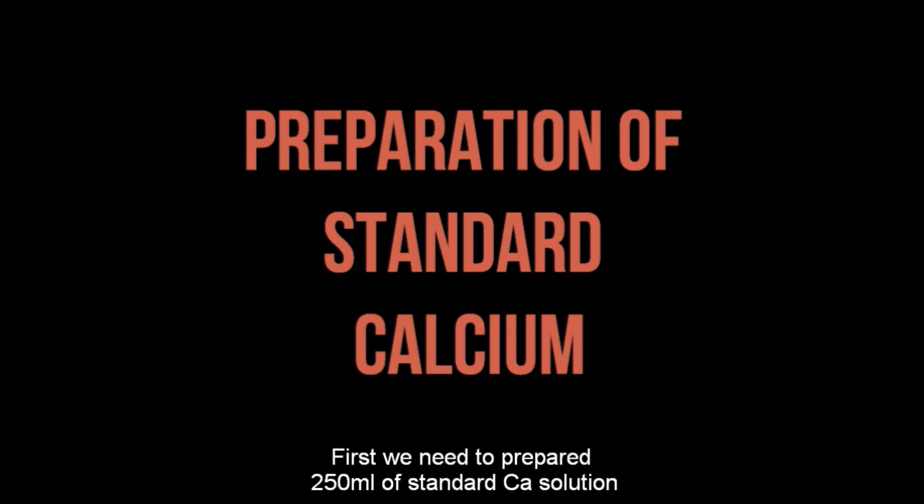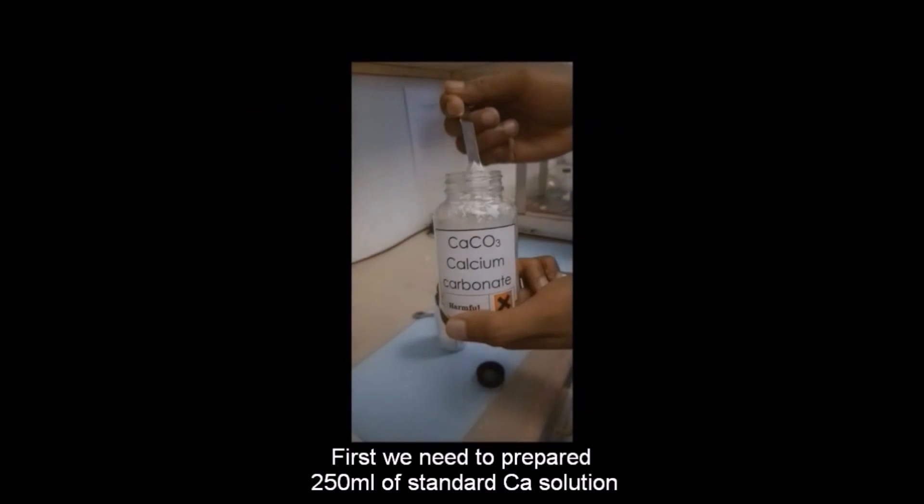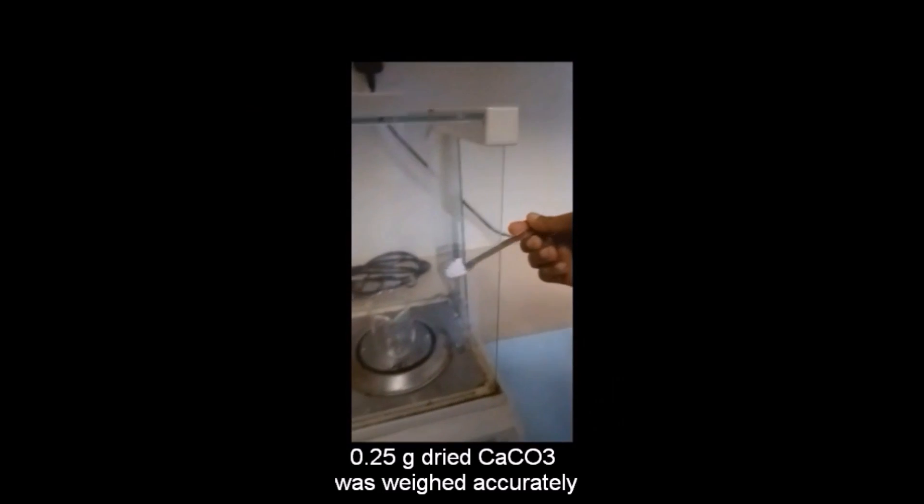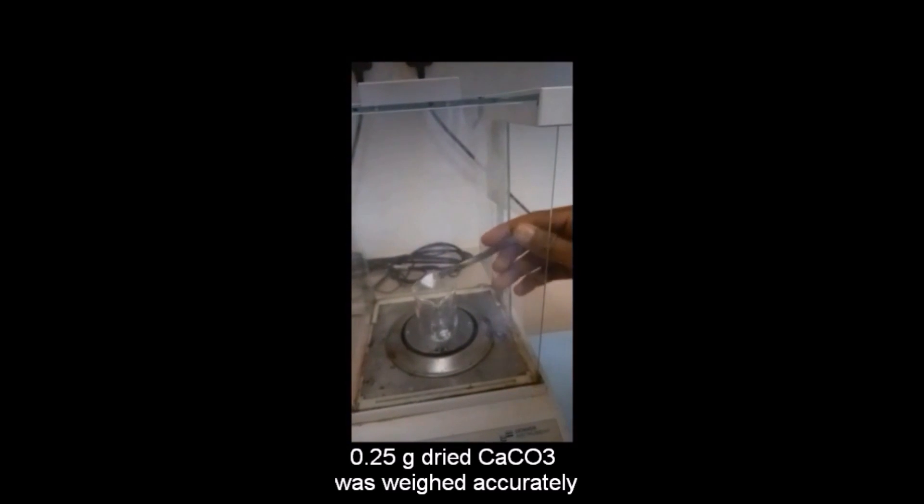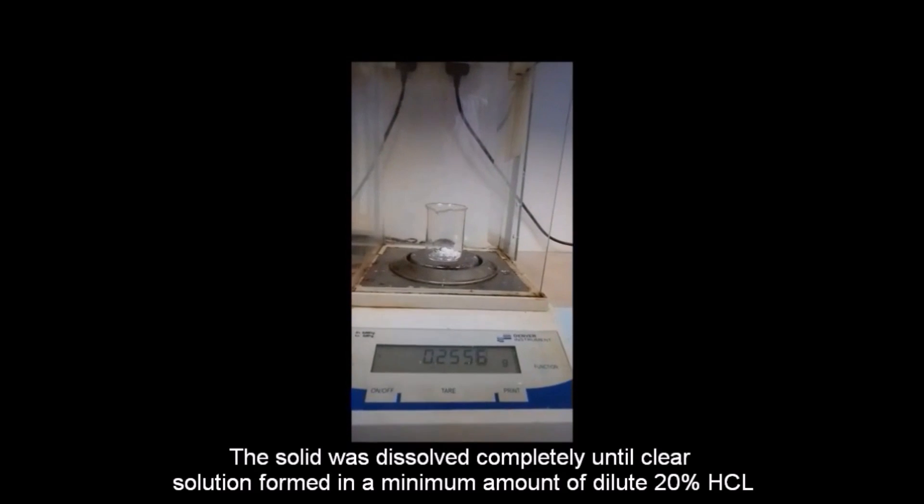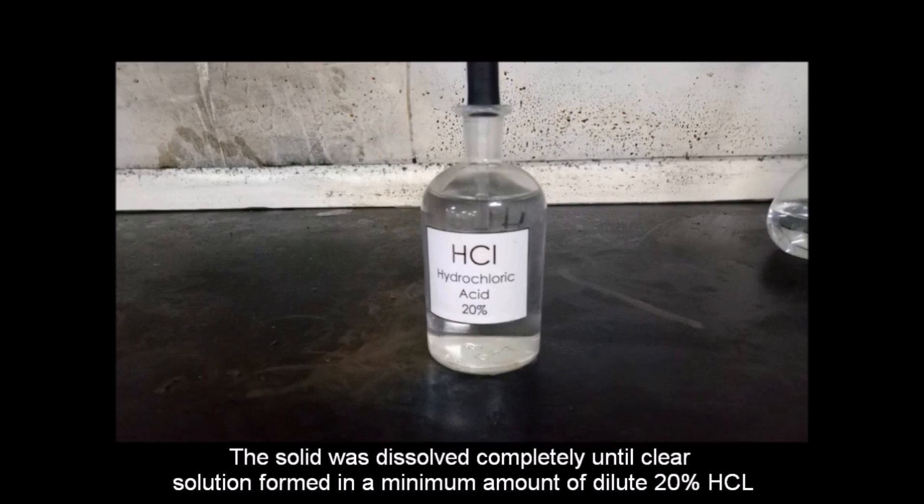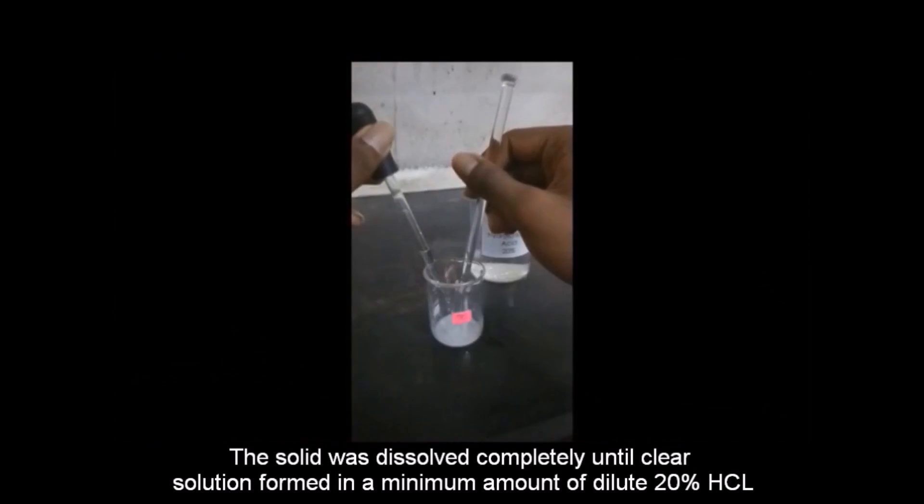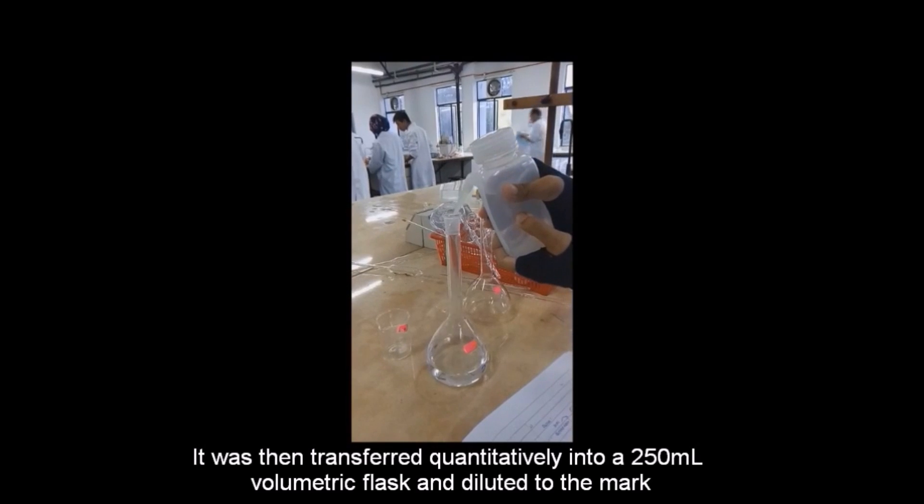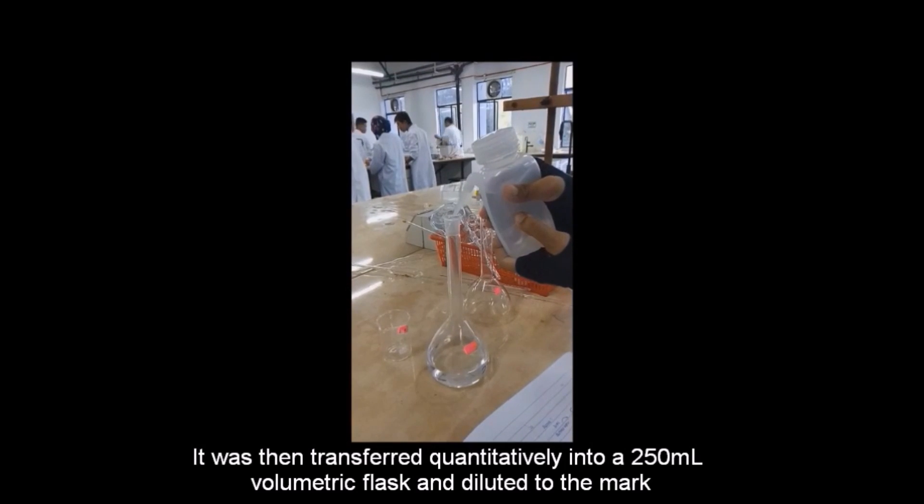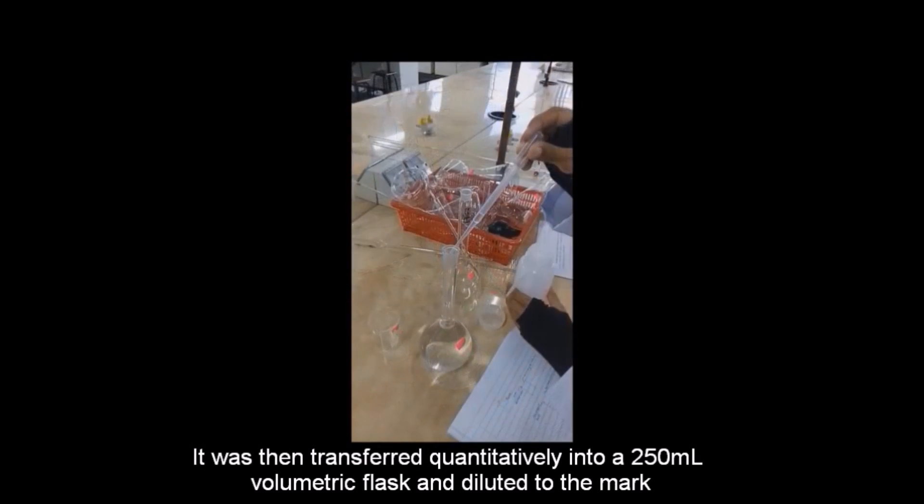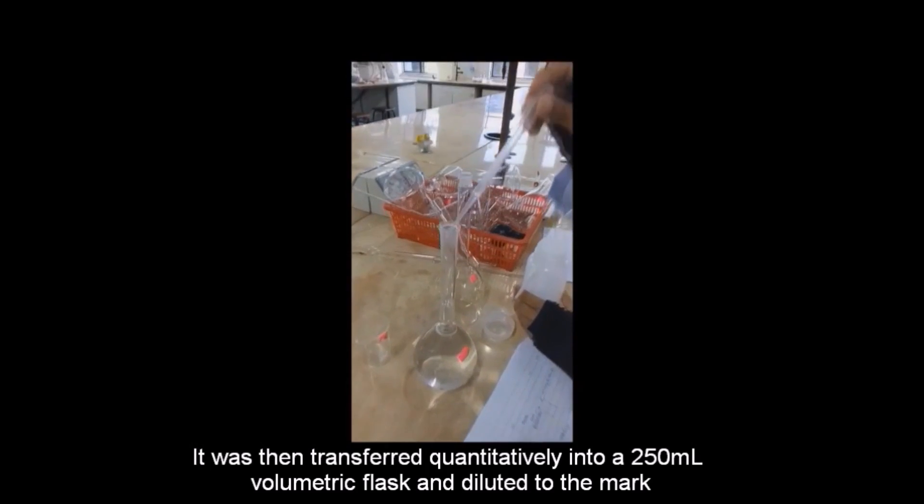First, we need to prepare 250 ml of standard calcium solution. 0.25 g dried calcium carbonate was weighed accurately. The solid was dissolved completely until clear solution formed in a minimum amount of dilute 20% hydrochloric acid. It was then transferred quantitatively into a 250 ml volumetric flask and diluted to the mark.